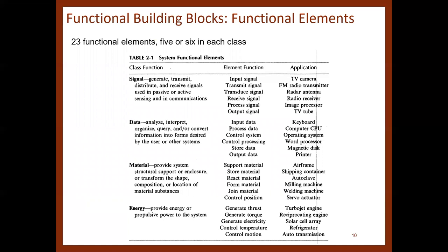In this slide we have the 23 functional elements based on each class function — signal, data, material, and energy — with five or six elements per class. For the signal class, we have: input signal (application: TV camera), transmit signal (FM radio transmitter), transduce signal (radio antenna, radar antenna), receive signal (radio receiver), process signal (image processor), and output signal (TV tube).